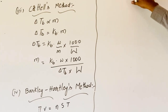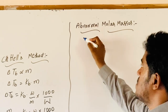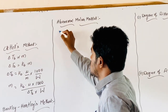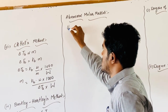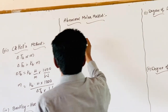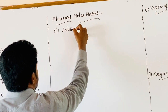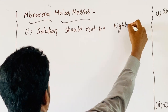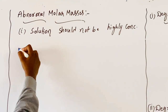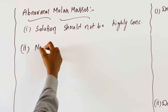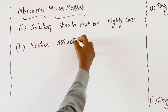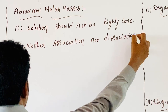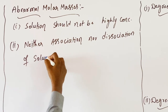Now coming to abnormal molar masses. To calculate and correct the molar masses, the solution should obey the following two properties. First, the solution should not be highly concentrated. Second, the solute molecules in solution should neither associate nor dissociate. That is, it should be a dilute solution with no association or dissociation of solute particles.